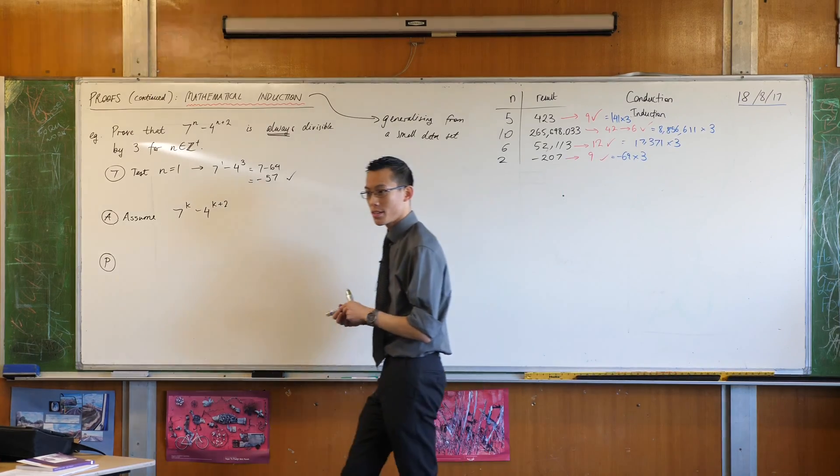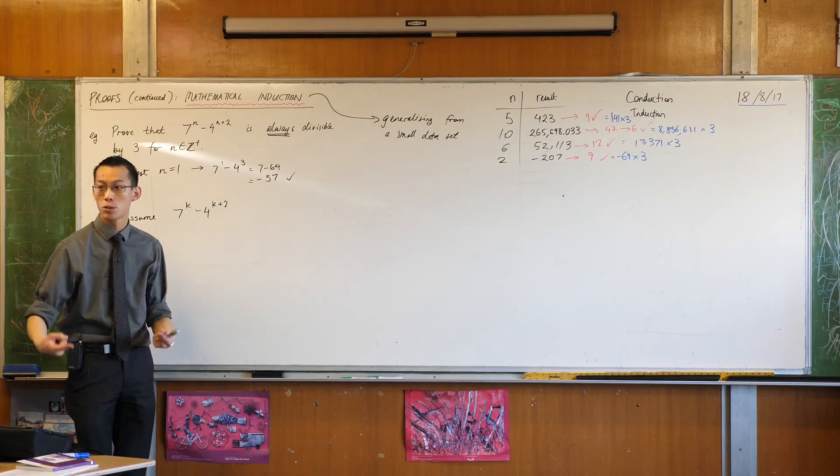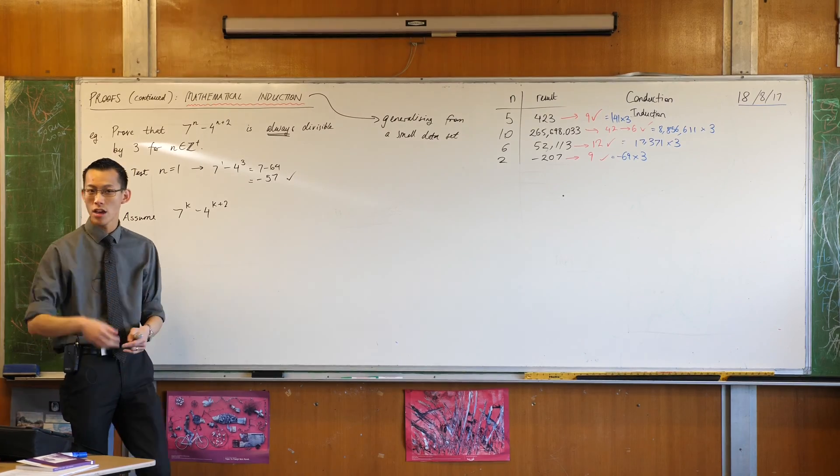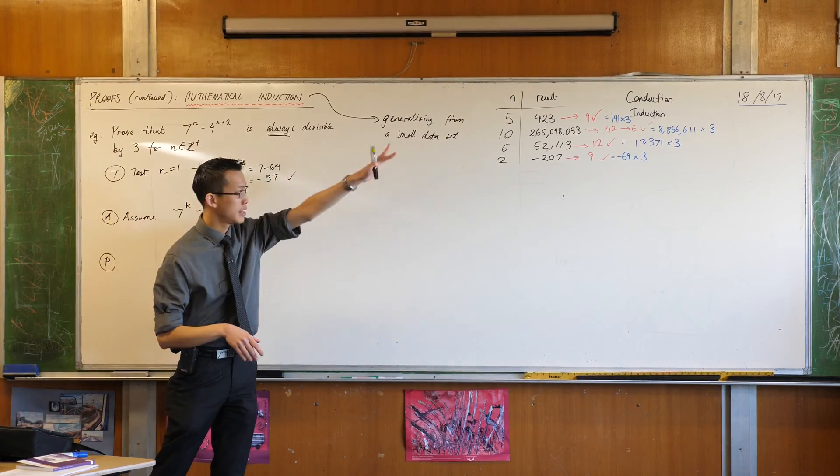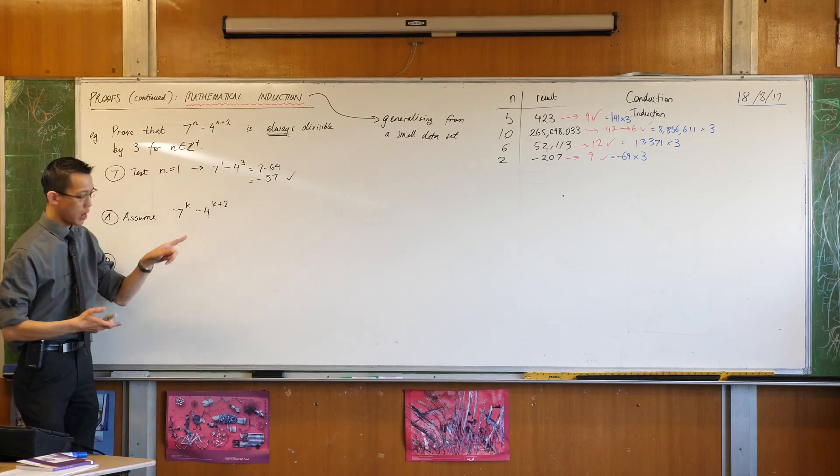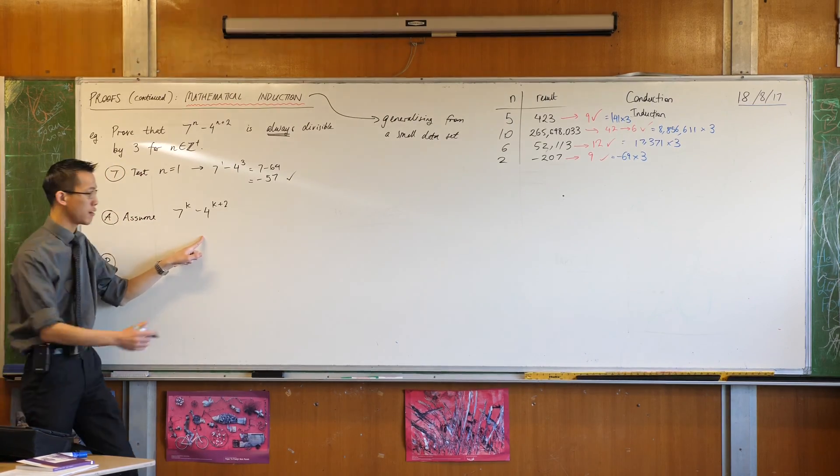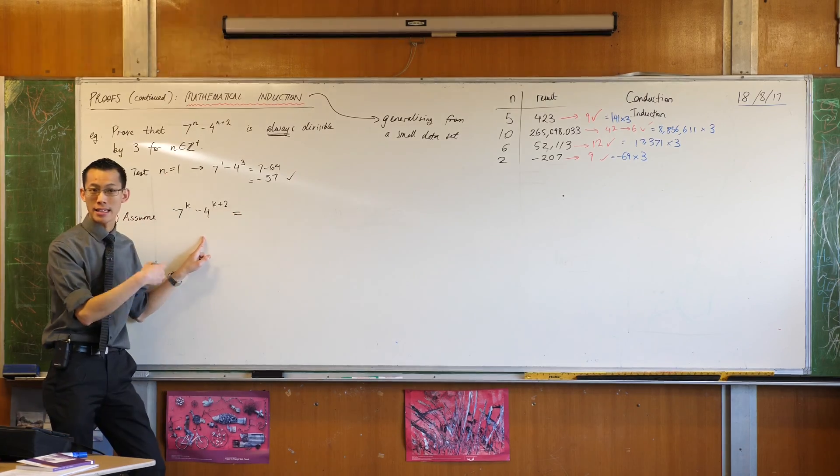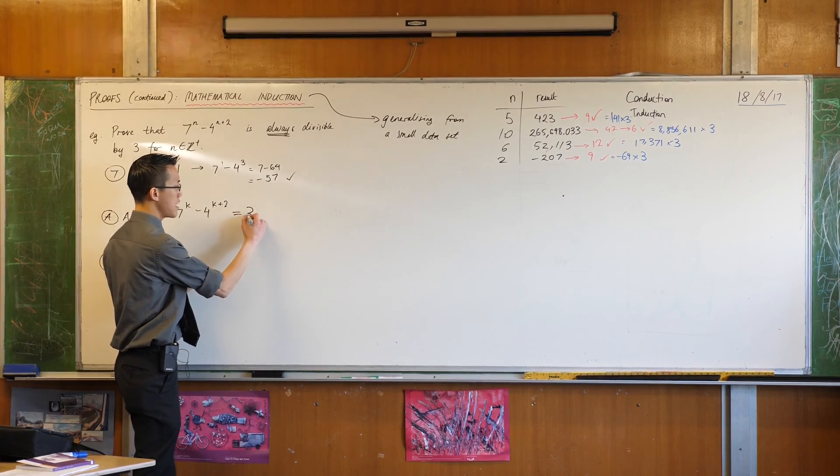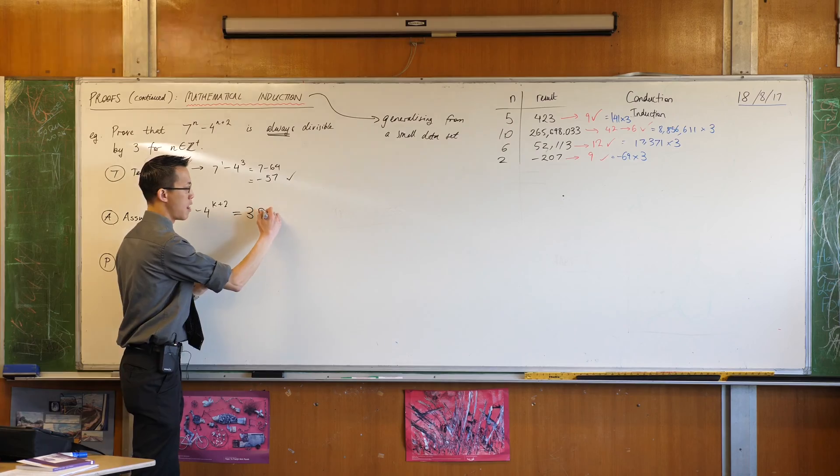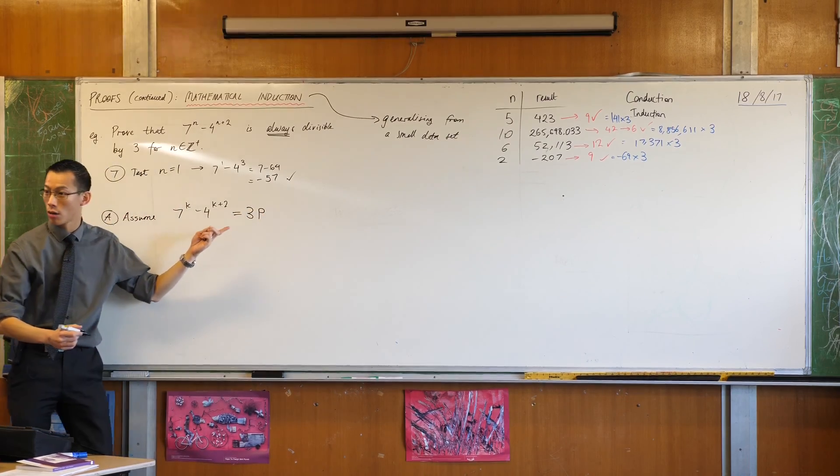So in other words, if a number is divisible by 3, then you should be able to write it as 3 times something else, and that should be a whole number. So I'm going to say, therefore, that this number here, if it really is divisible by 3, I should be able to say it's equal to 3 times some other number where that thing's a whole number.